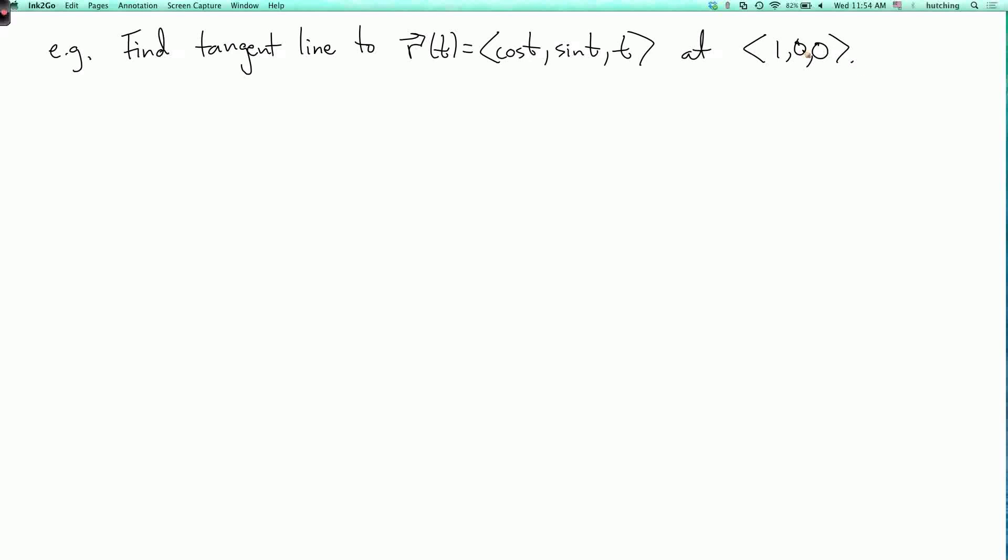So we first have to figure out which value of the parameter t gives us the point one comma zero comma zero. Well, we can see just by looking at the z component that that has t equals zero. So at t equals zero, we have R of t equals one, zero, zero.